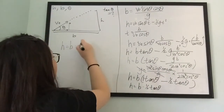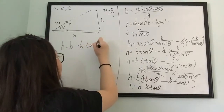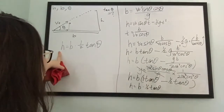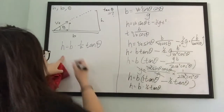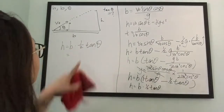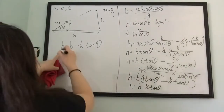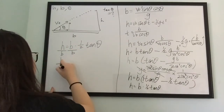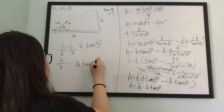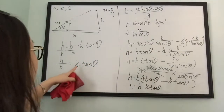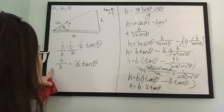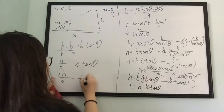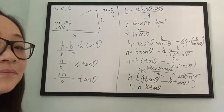h equals b times one-half tan(θ). To isolate tan(θ), divide both sides by b, giving h over b equals one-half tan(θ). Multiply both sides by 2: 2h over b equals tan(θ). So the answer is tan(θ) equals 2h over b — not h over b, which was the initially incorrect guess.